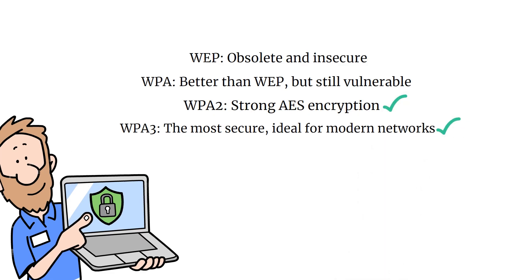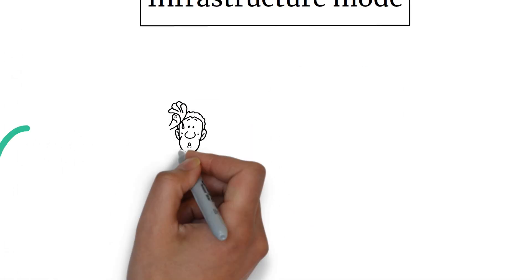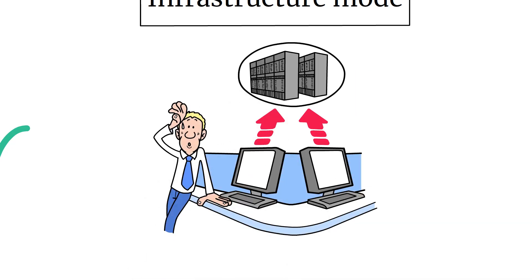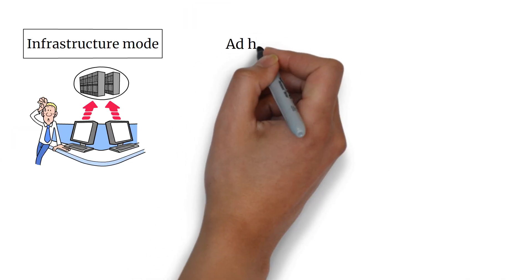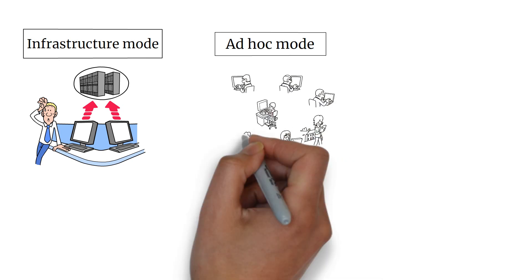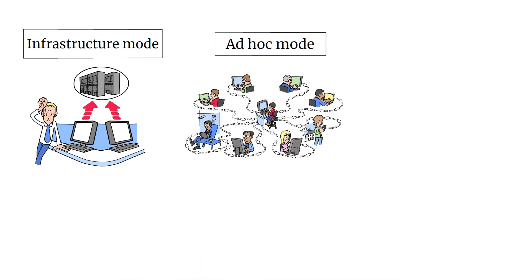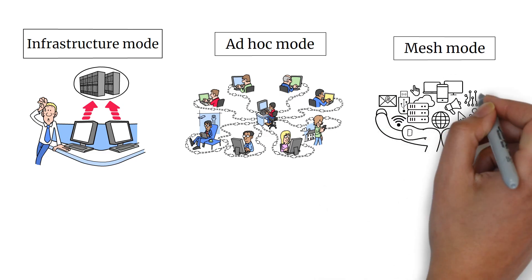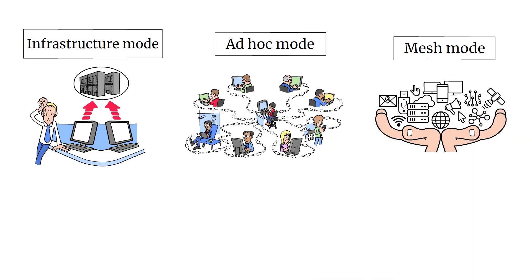Wireless networks can operate in different modes. Infrastructure mode is the most common — devices connect through a central access point. Ad-hoc mode allows devices to connect directly to each other. Mesh mode uses multiple access points to form a single, seamless network.